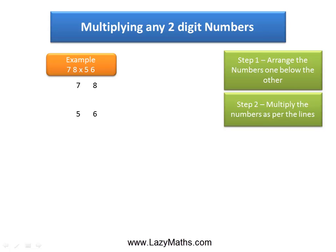The next step is to multiply the numbers as per the lines that we are about to draw. The first line is between 8 and 6, so we multiply 8 times 6 and we get 48. We write 48 in this particular manner because 4 is going to be a carryover, as 4 is in the tens place and 8 is in the ones place.